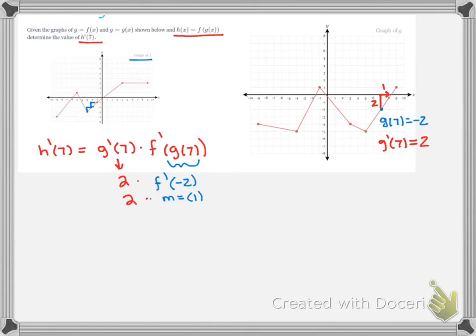So we have 2 times 1, and H'(7) equals 2.